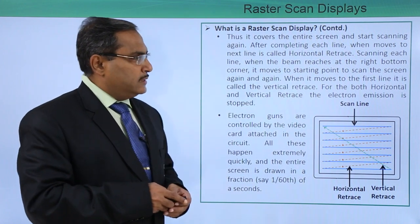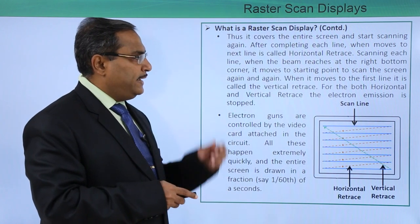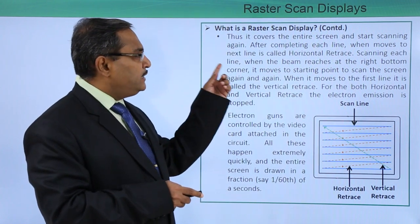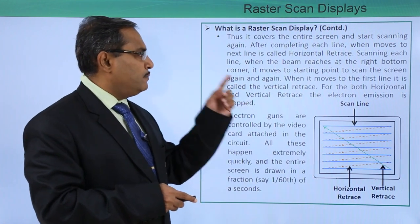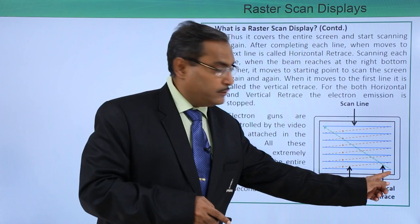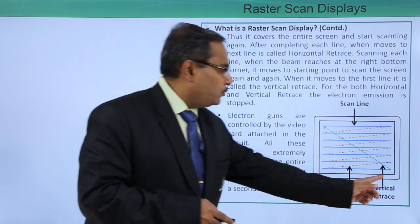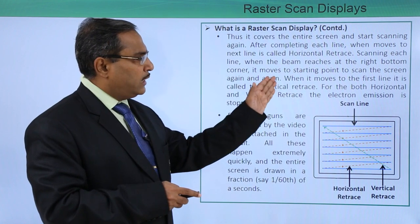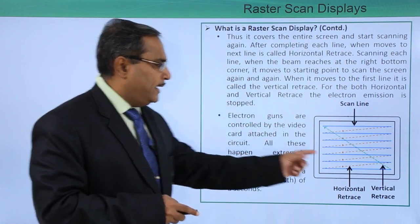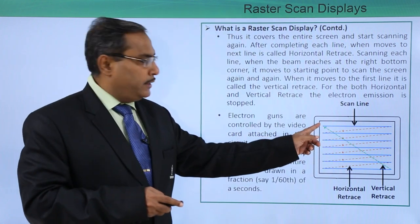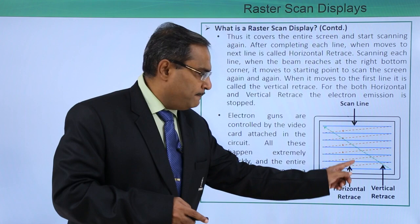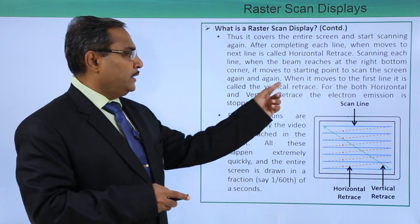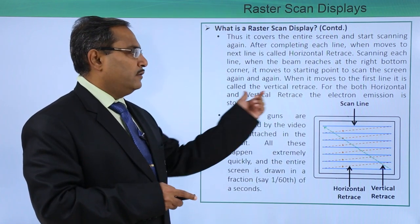Thus it covers the entire screen and starts scanning again after completing each line. When it moves to the next line, that is called the horizontal retrace — shown in dotted form. When the beam reaches the right bottom corner, it moves to the starting point to scan the screen again, and this return to the first line is called the vertical retrace, also shown in a dotted line.